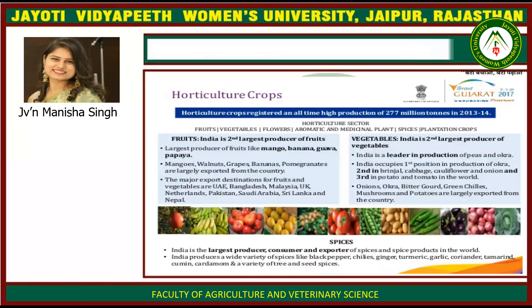For horticulture crops, India registered an all-time high production of 277 million tons in 2013–14. India is the second largest producer of fruits like banana, mango, guava and papaya. Mangoes, walnuts, grapes, bananas and pomegranates are largely exported. Major export destinations for fruits and vegetables are UAE, Bangladesh, Malaysia, UK, Netherlands, Pakistan, Saudi Arabia, Sri Lanka and Nepal.